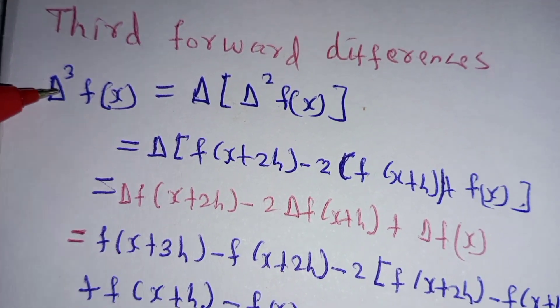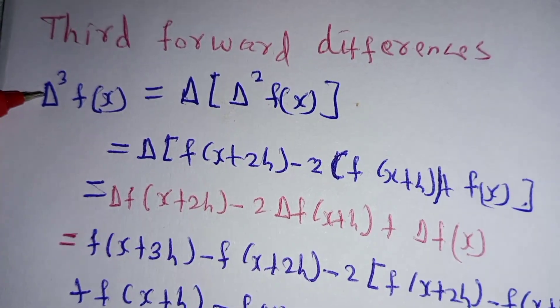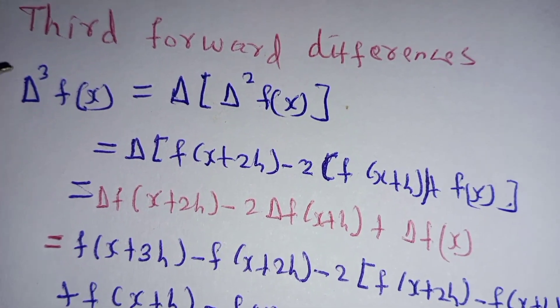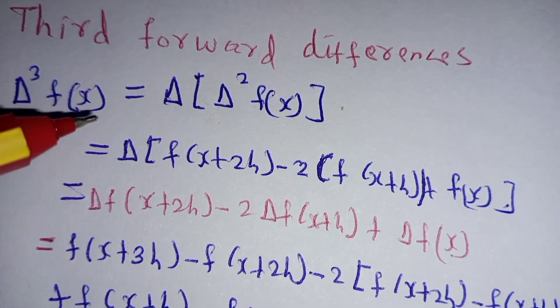We write it as this symbol Δ³f(x). This stands for the third forward difference.